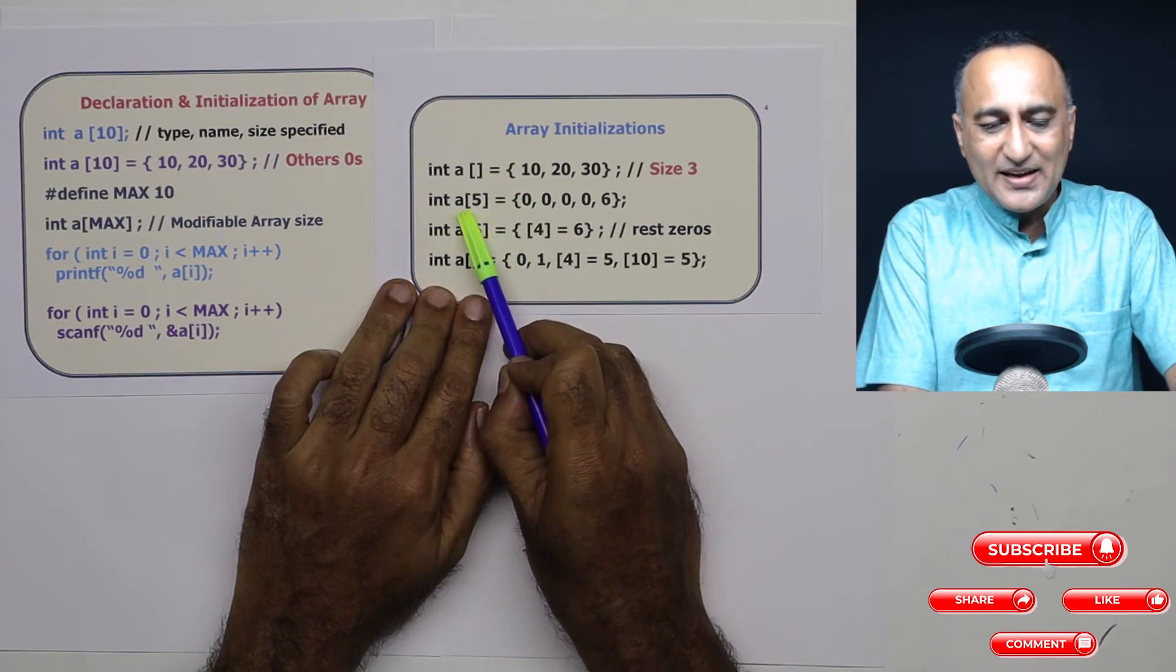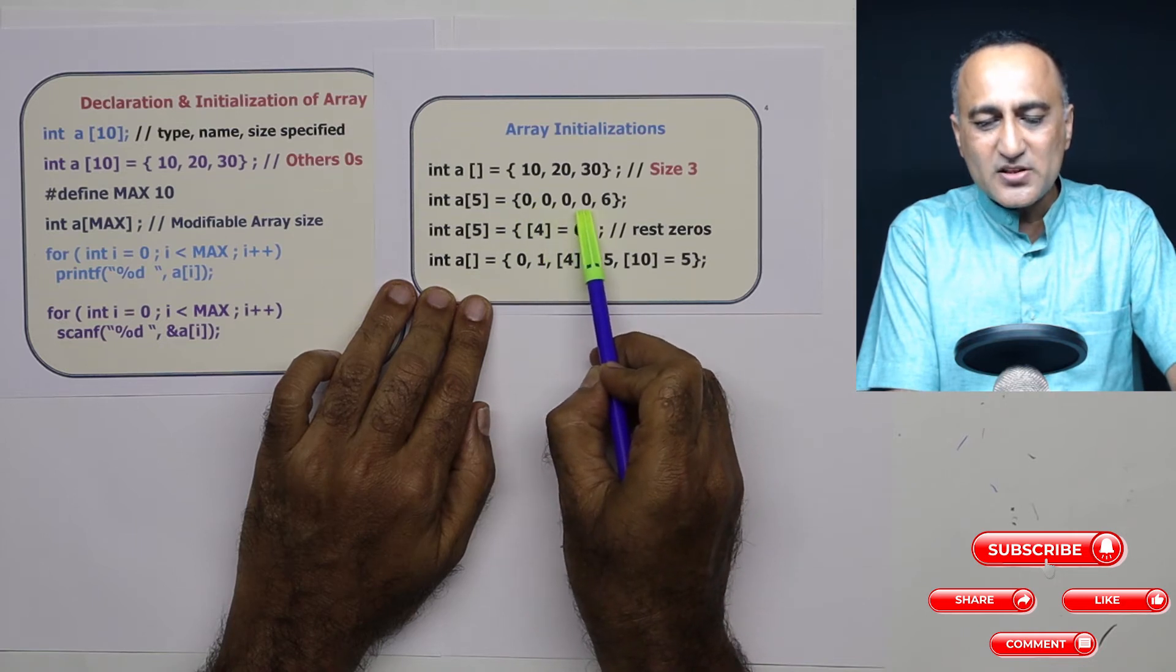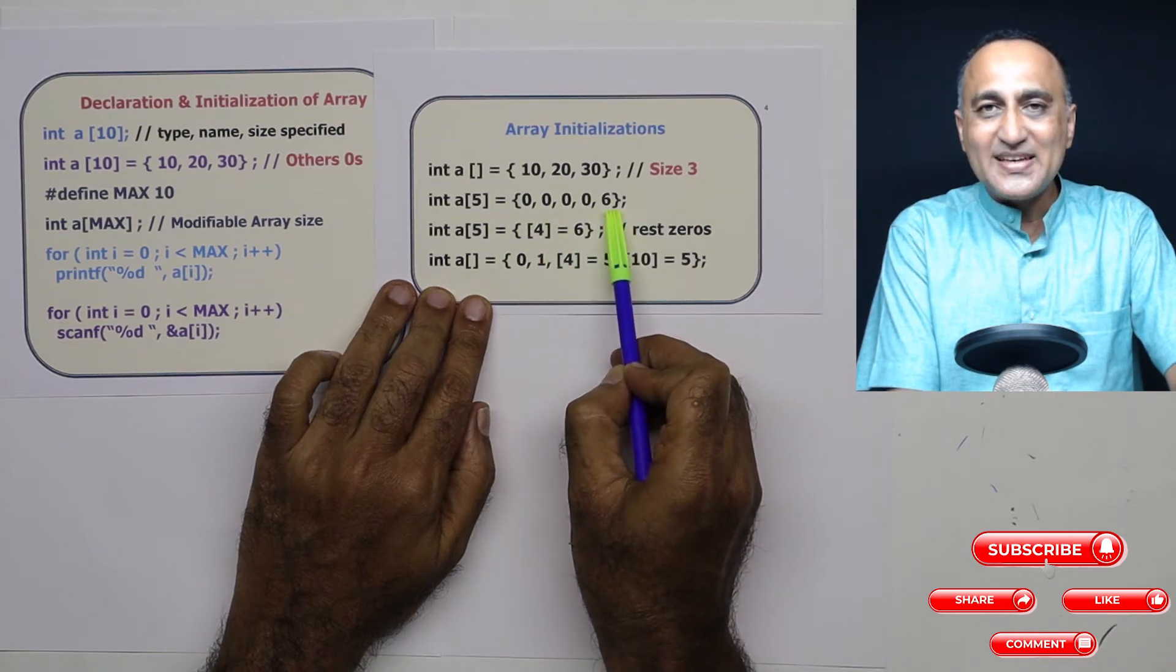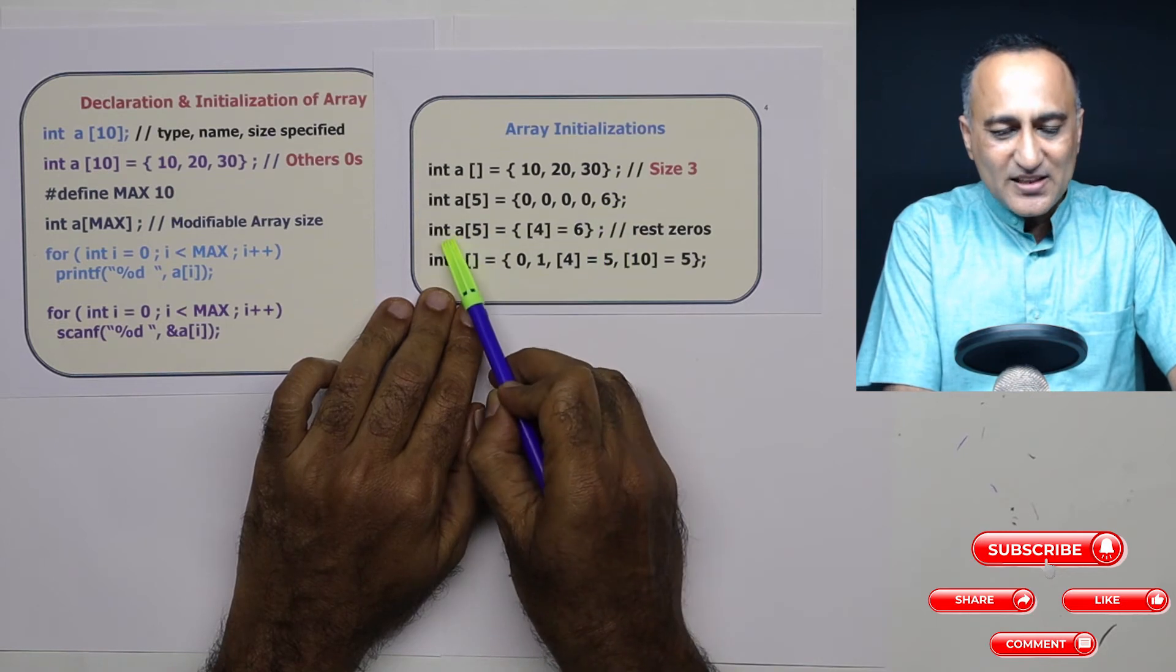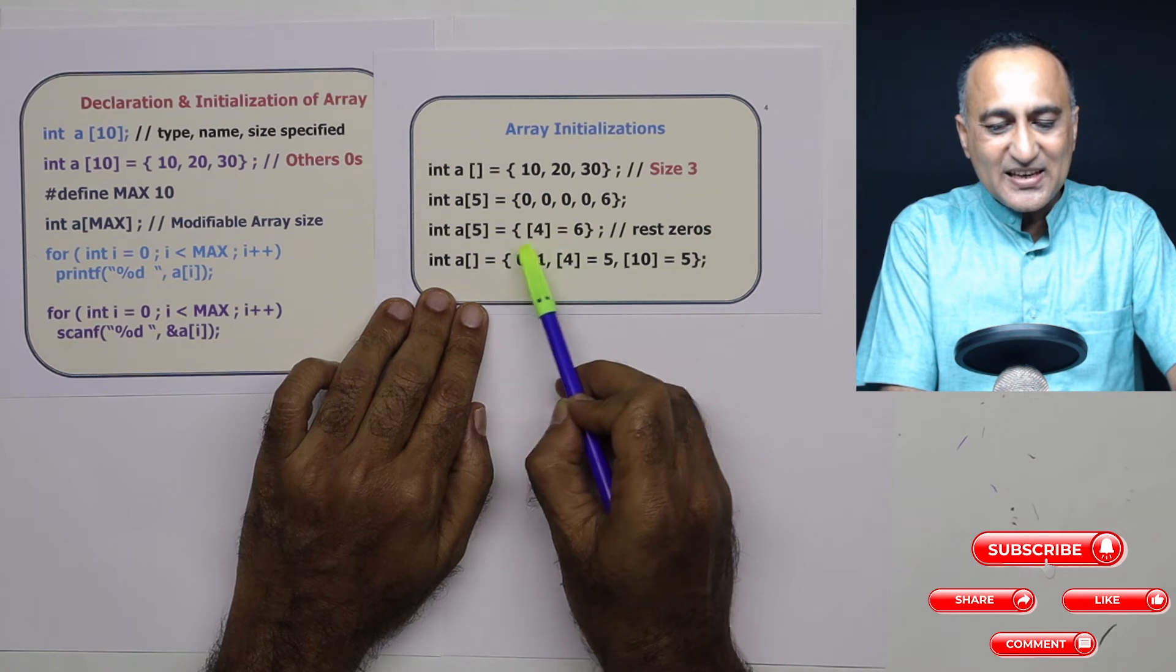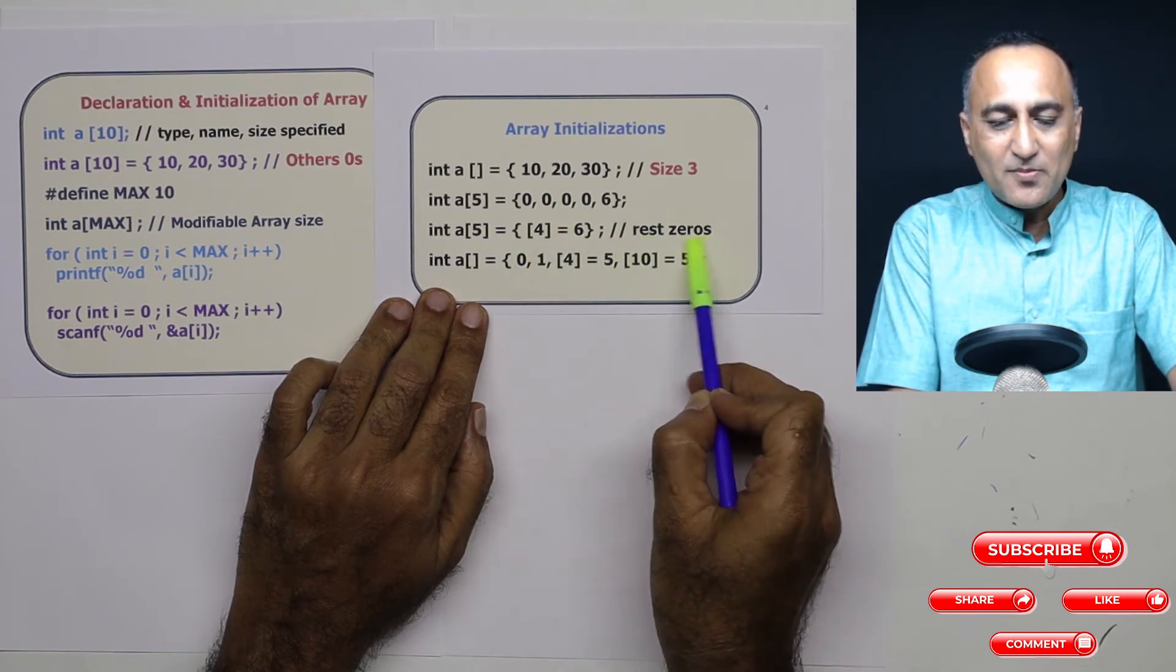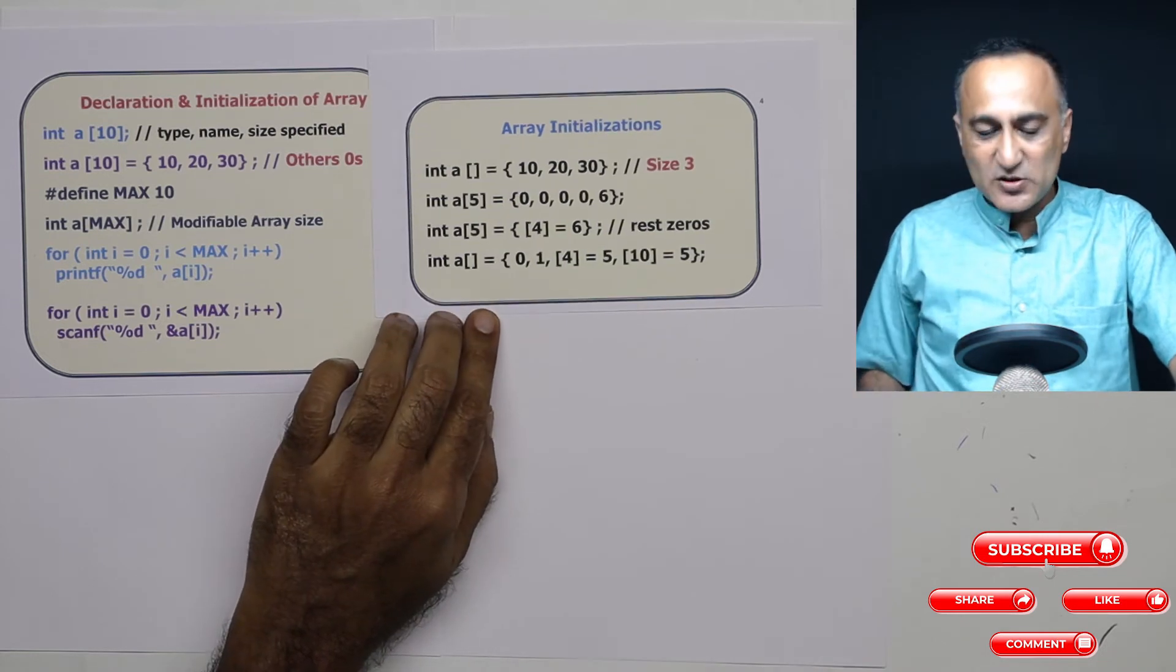Now what I have done is I have declared int a of five. I've initialized the first four with zeros and the last element with six. I have done the same declaration here, but what I am doing is I am only initializing the last place with six. The rest of them will automatically be initialized with zeros.